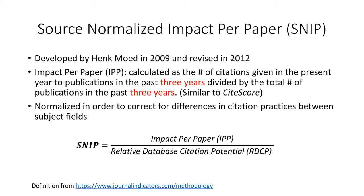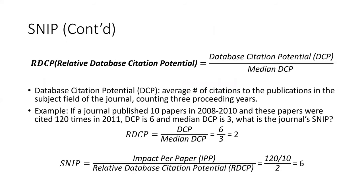The impact per paper is normalized in order to correct for differences in citation practices between subject fields. Database citation potential, by definition, is the average number of citations to publications in the subject field of the journal counting three preceding years. Let's look at an example.